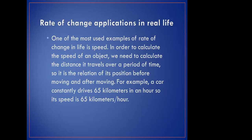There are many applications of rate of change in real life. One of the most used examples is speed. In order to calculate the speed of an object, you need to calculate the distance over time. So it's the relation of the position of the moving object before it moves and after it moves. For example, a car that drives 65 kilometers in an hour constantly.